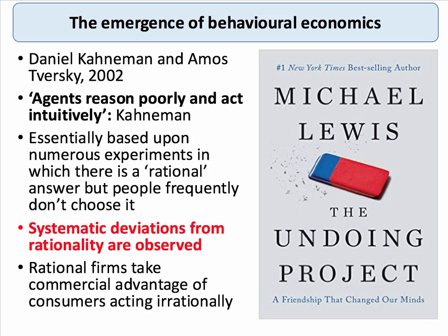What Kahneman and Tversky did — explained beautifully in Michael Lewis's book 'The Undoing Project' — is they set up numerous often quite revealing experiments in which there was a rational answer, but people frequently didn't choose it. And it wasn't just students; we're talking about high-profile academic professors who weren't choosing the rational answer to a particular problem posed. What Kahneman and Tversky observed were systematic deviations from rationality. This was essentially the genesis of behavioural economics, and indeed much of behavioural economics since has looked at how rational firms can take commercial advantage of consumers acting irrationally.